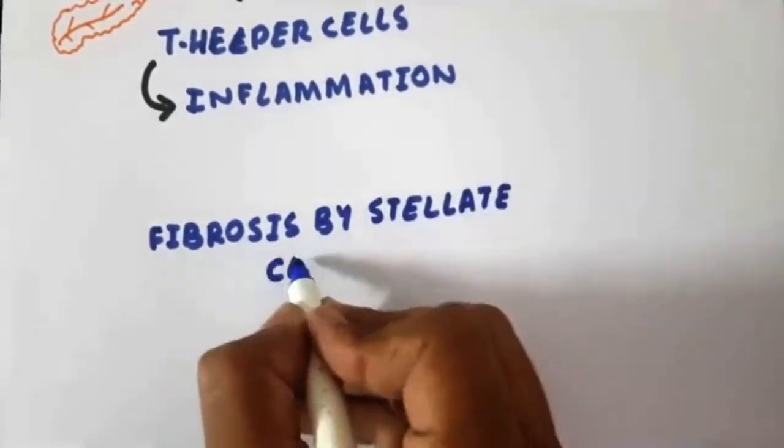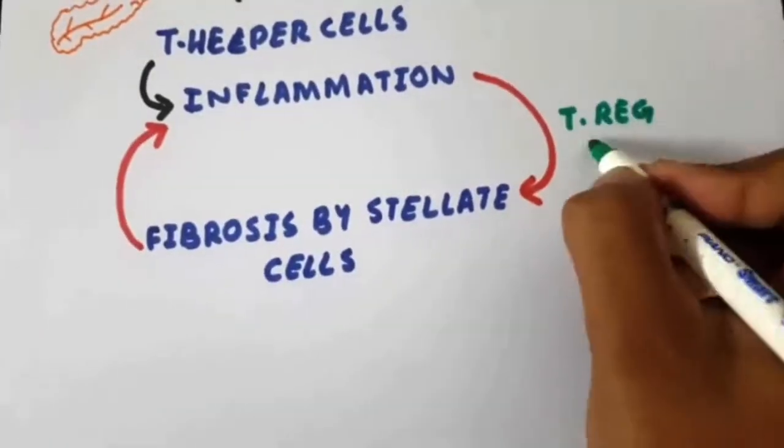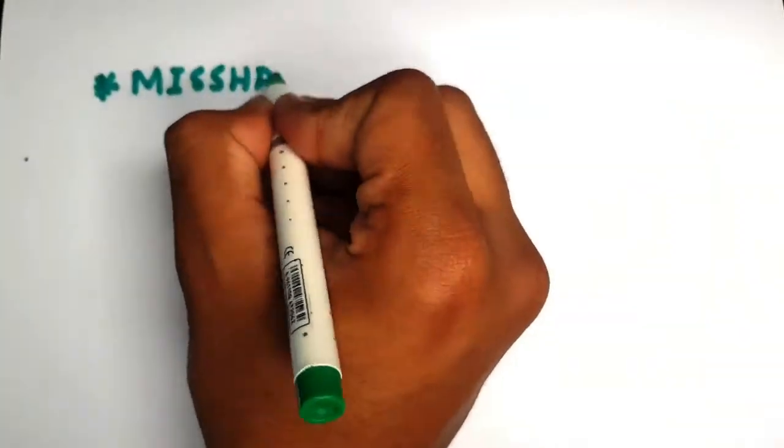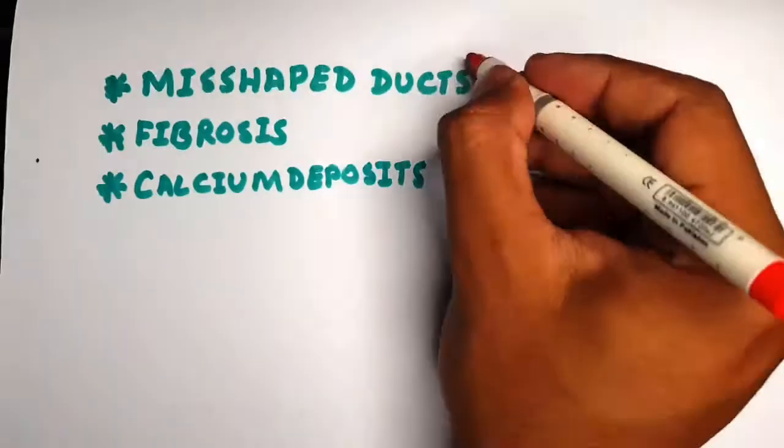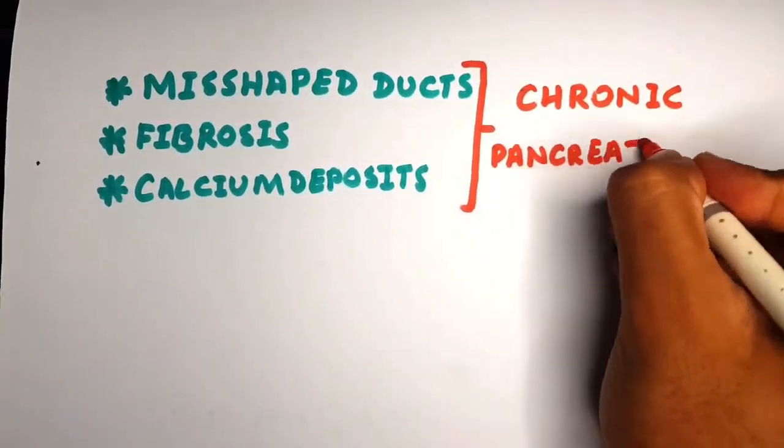This cycle of inflammation and fibrosis, aided by T regulatory cells, causes misshapen ducts, fibrosis of the pancreas, and calcium deposits—all features of chronic pancreatitis.